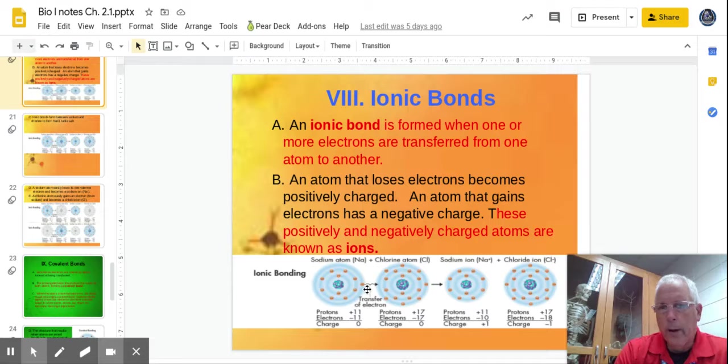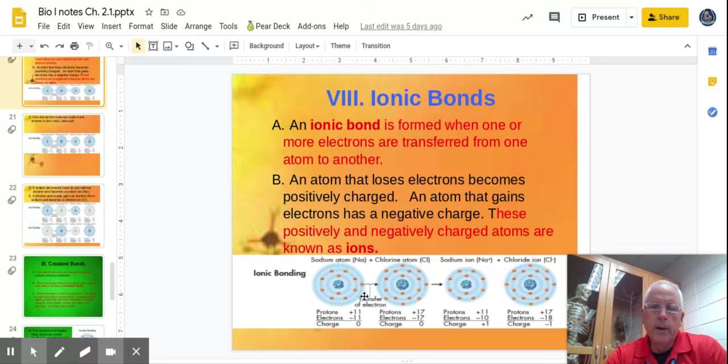What happens sometimes is if we have like one lone electron, like right here with the sodium atom, and I need a lot more, so it makes sense that I'm going to get rid of that one lone electron. It's a lot easier to get rid of one than try to find 17, right? Chlorine has the opposite problem. They just need one more. It makes sense that I will accept one easier than trying to get rid of seven or whatever.